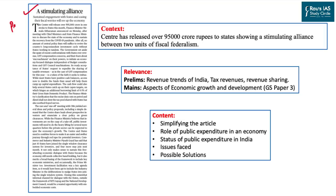The first article was published on page 8 of the Delhi edition Hindu Newspaper. The writer has suggested that there should be a collaborative effort on the part of the centre as well as the states when it comes to public expenditure. The context is that the central government recently released over 95,000 crore rupees to the states, showing a stimulating alliance developing towards better fiscal federalism in the country.